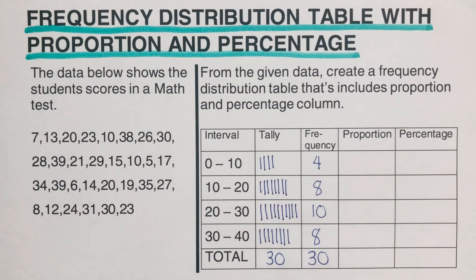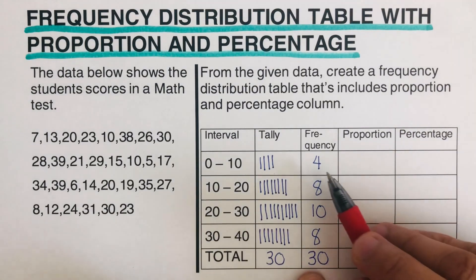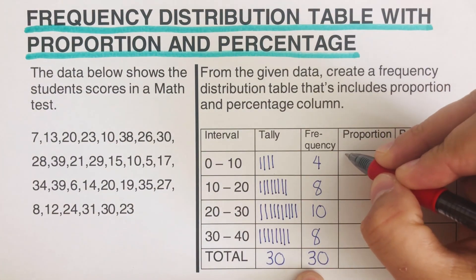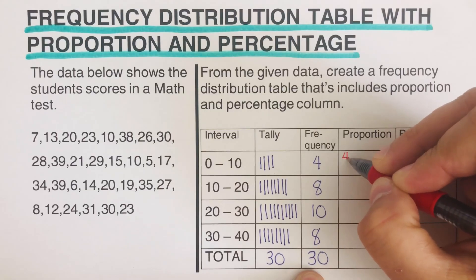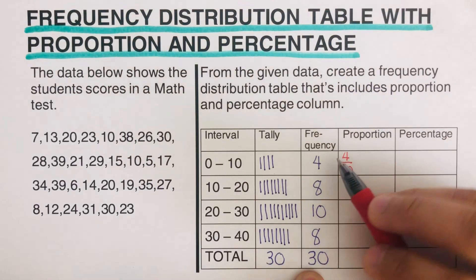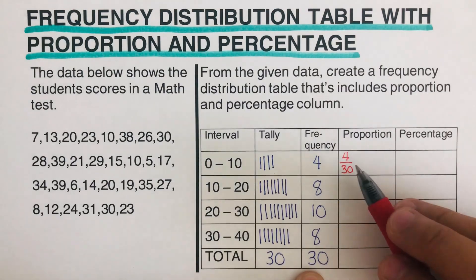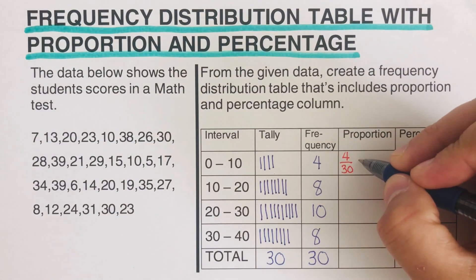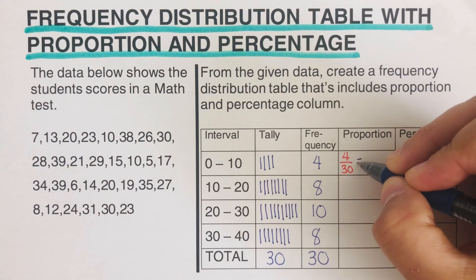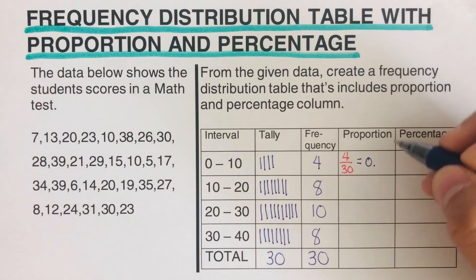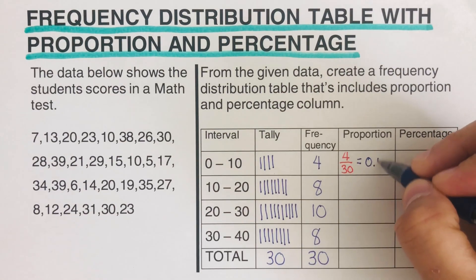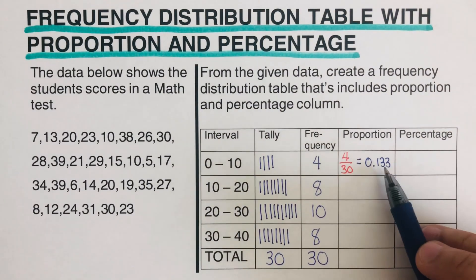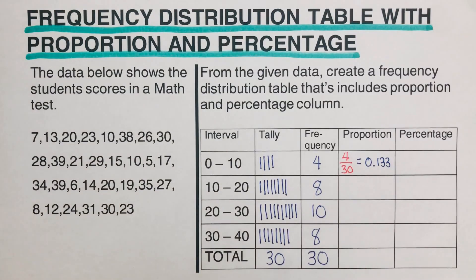To get the proportion for each row, we use the formula: frequency divided by the total. So for the first interval with frequency 4, that is 4 over 30. Using the calculator, 4 divided by 30 gives us 0.133 — rounded to three decimal places, since the 3 repeats.